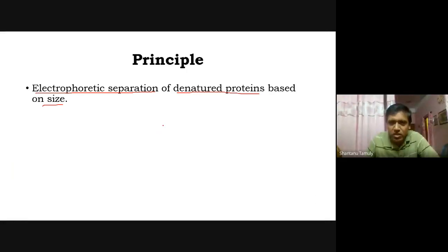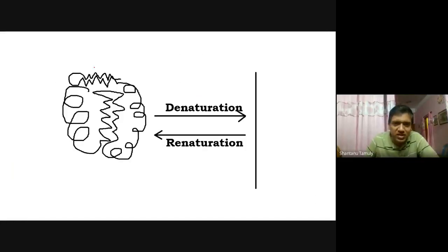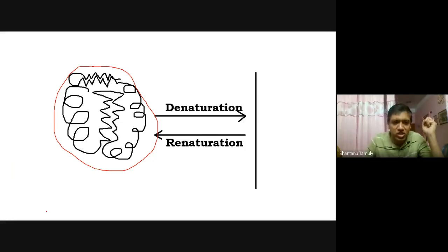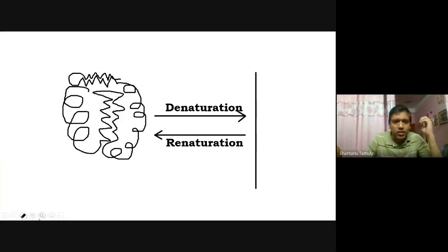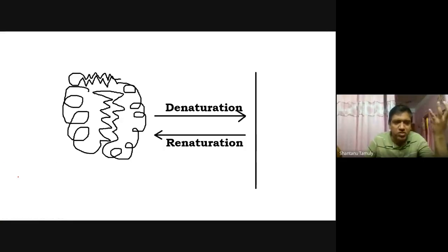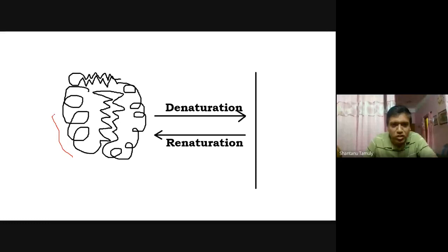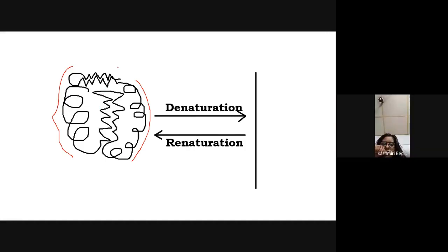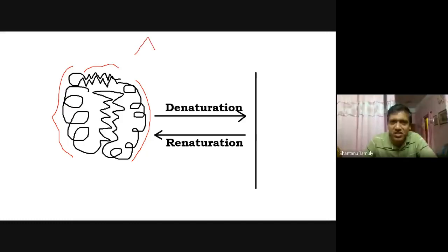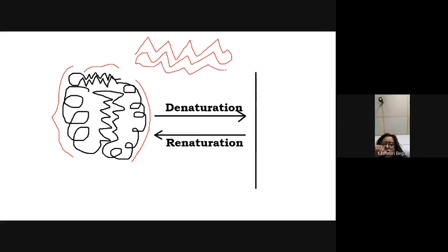Now we will discuss what denatured proteins are. This particular protein has a three-dimensional structure. From your undergraduate classes, you know that proteins have different types of structures like alpha helix and beta sheets. You can see this helical part is alpha helix, and this part is a beta sheet, which forms a pleated sheet-like structure.